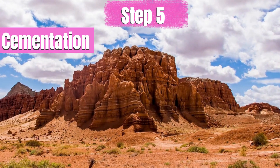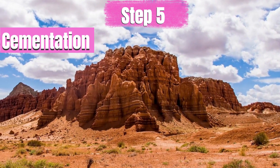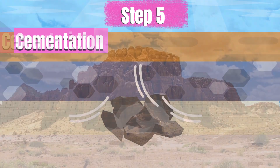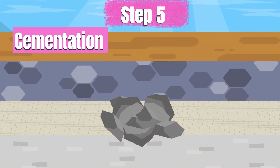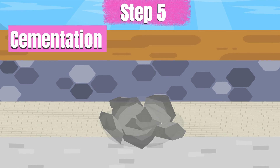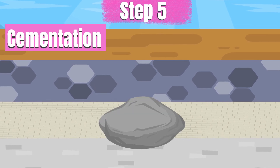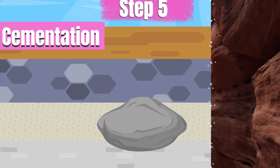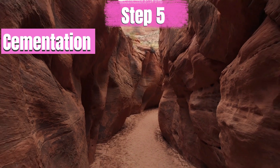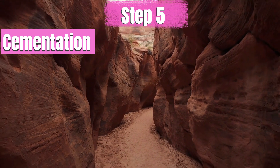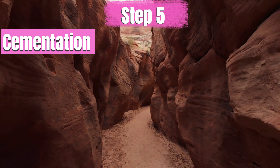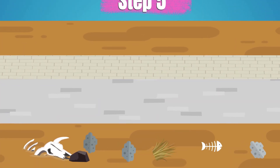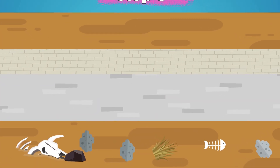Step 5: Cementation — gluing the sediments together. After compaction, the sediments undergo a process called cementation. Cementation happens when minerals dissolved in water seep through the compacted layers, acting like glue to bind the particles together. This natural cement turns the loose sediments into solid rock. This stage is crucial for forming sedimentary rocks, which often contain the organic material that becomes fossil fuels. Cementation locks these organic materials within the rock layers, preserving them until they transform under the right conditions.